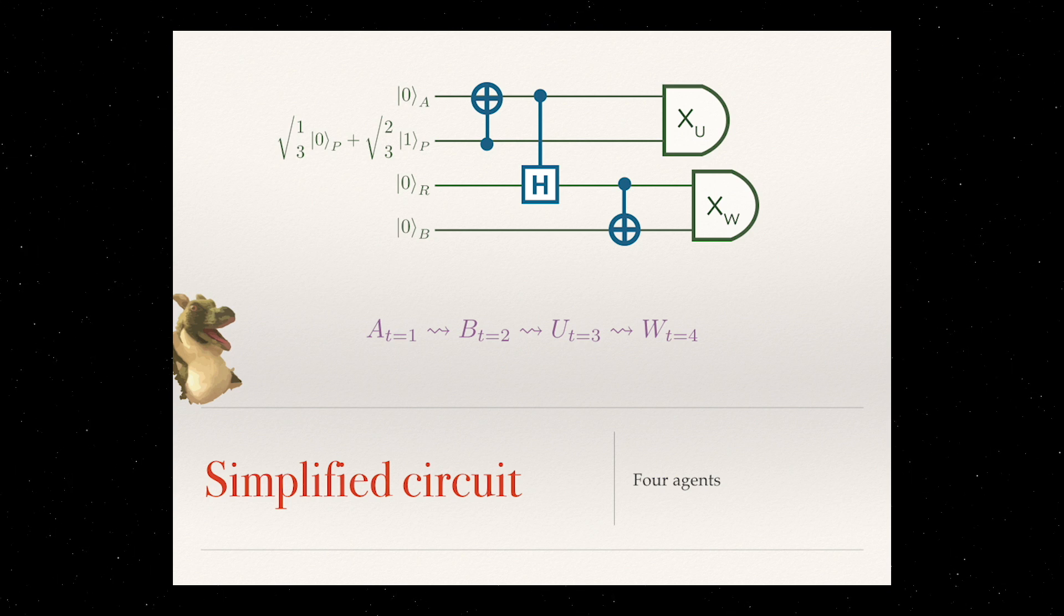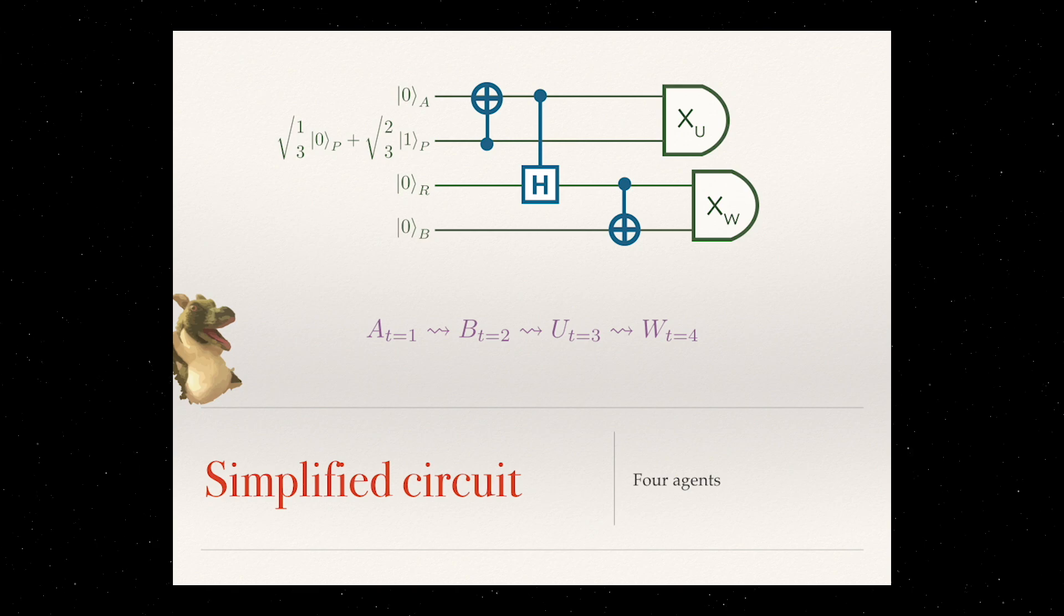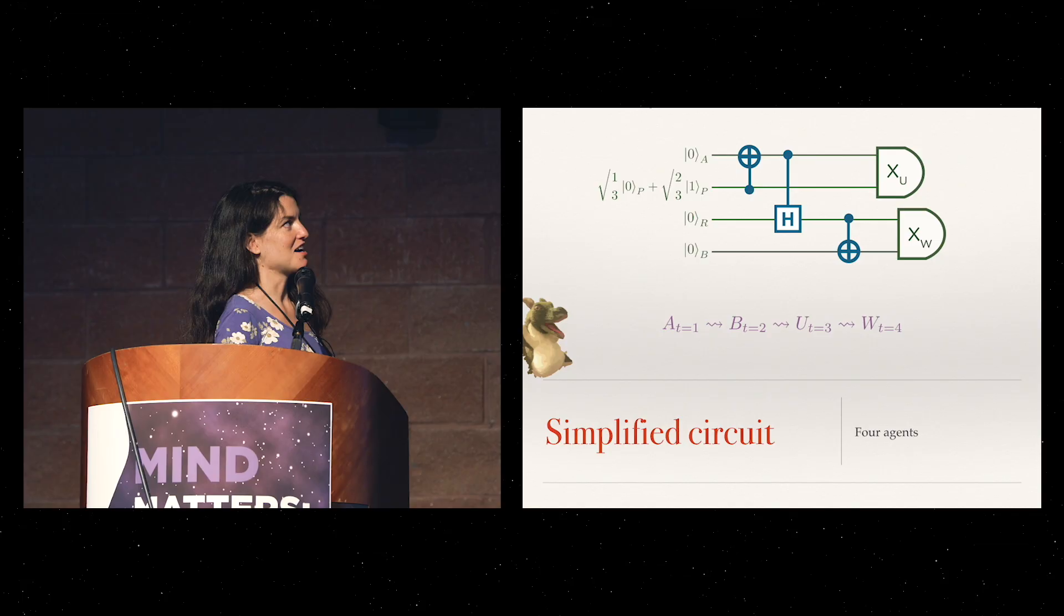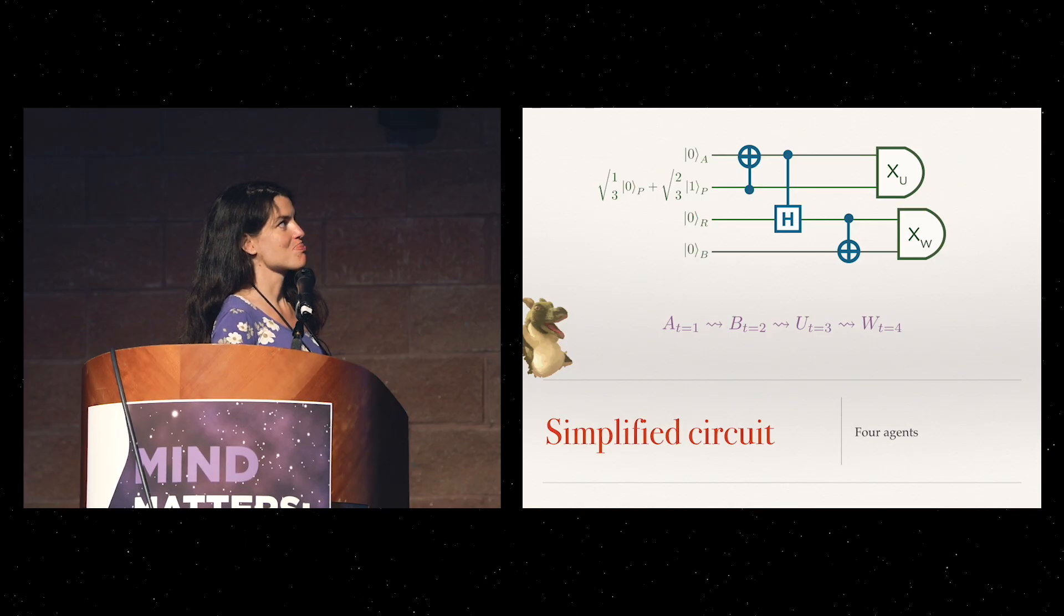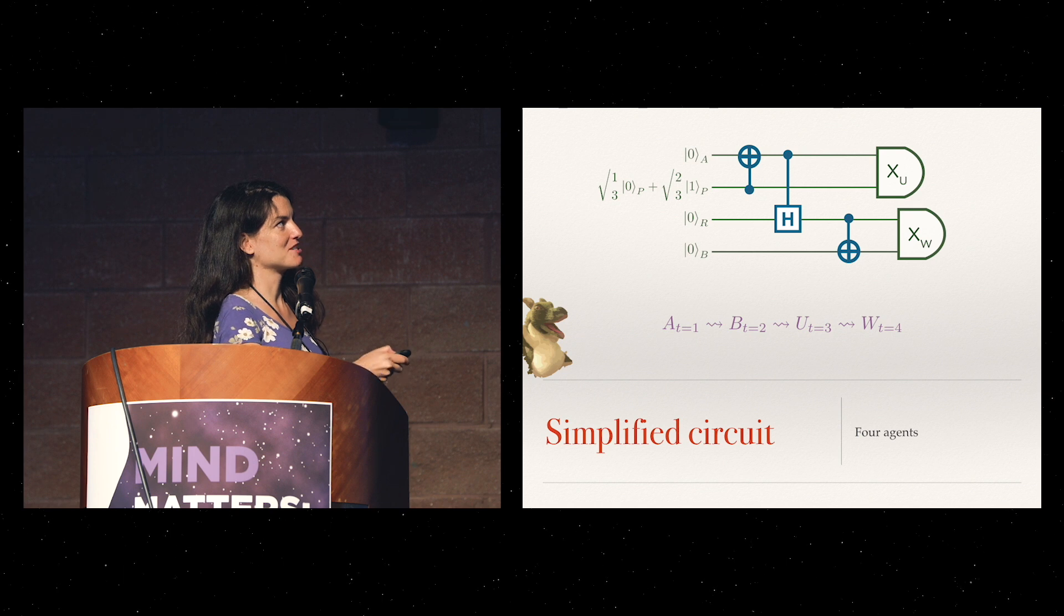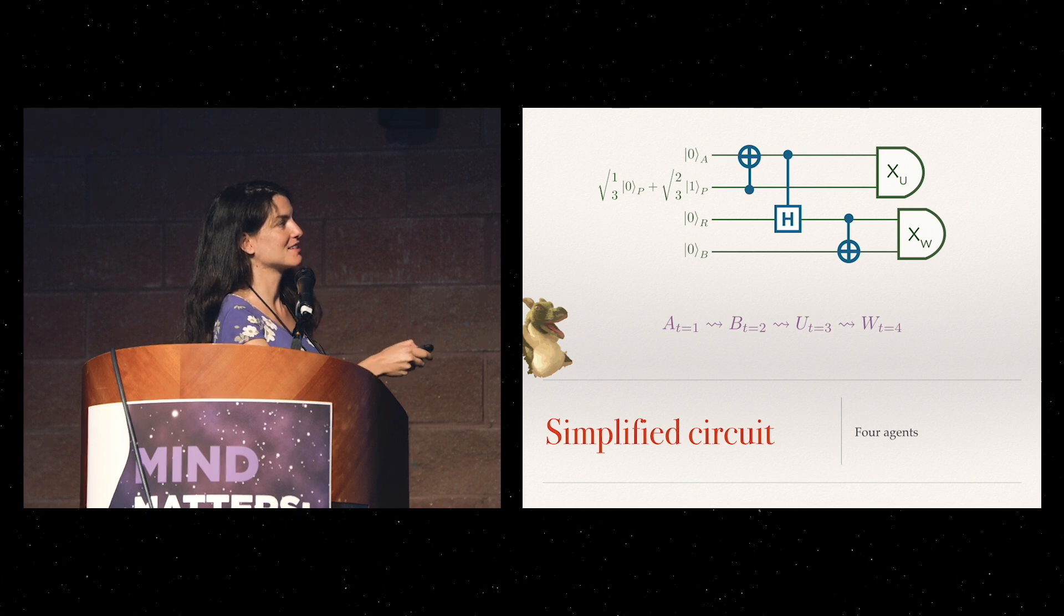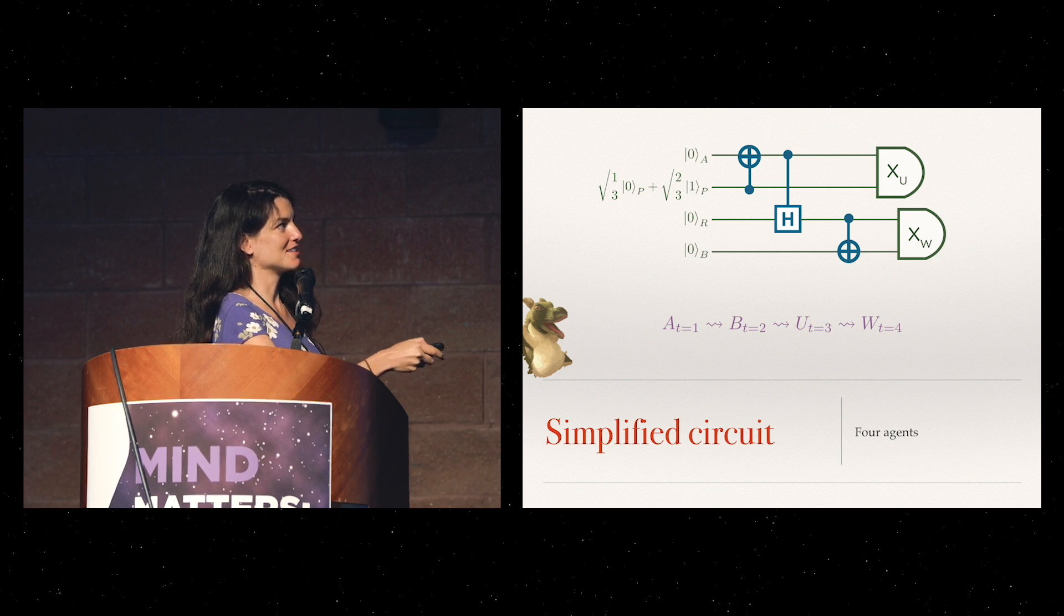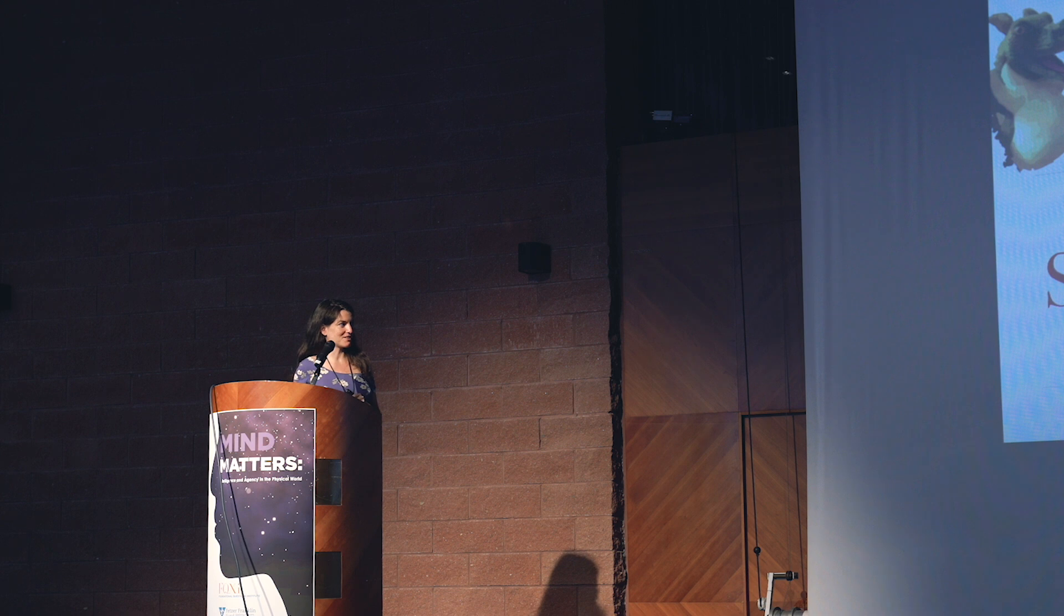In case you prefer the circuit language, this is what's going on at a high level. There was this system that was in the state that Alice measured, so she got entangled with it. Then depending on the outcome, she applied a Hadamard or not on another system, which she gave to Bob and Bob then measured it. Then someone came and measured Alice in this basis, and someone came and measured Bob in this basis. Then using some kind of trust between the statements, they reached a contradiction. Now this is a very simplified circuit.